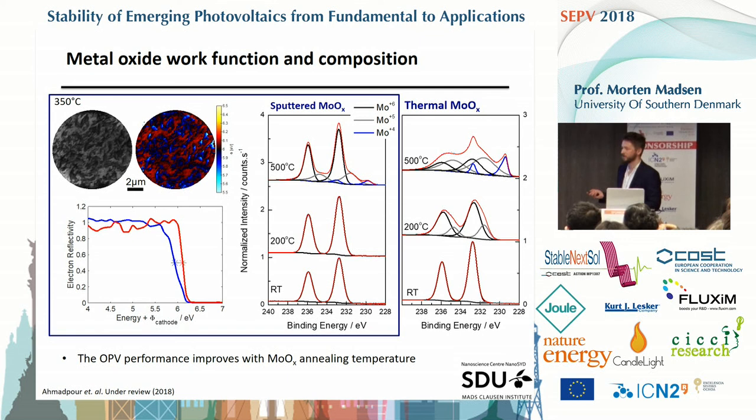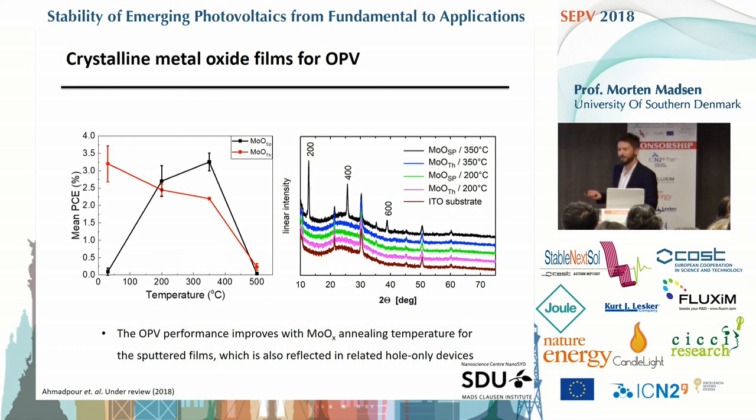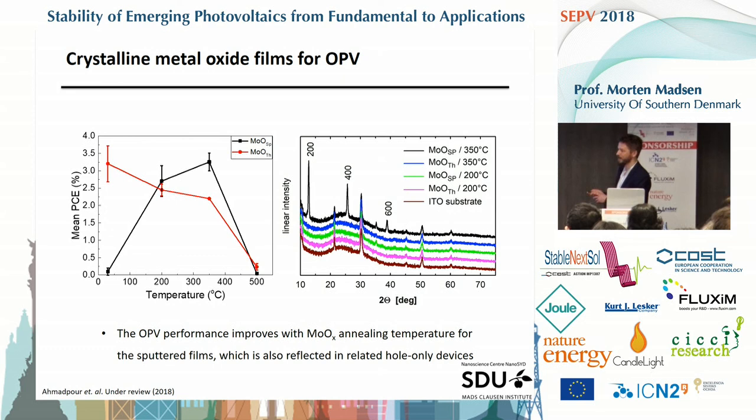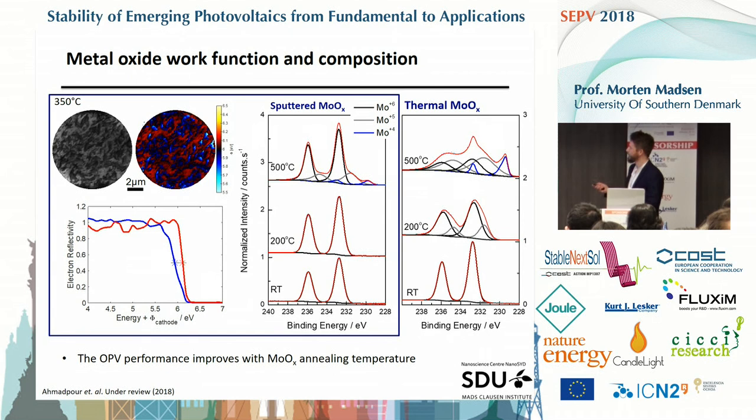We lose significantly more oxygen in the thermally deposited molybdenum oxide than in the sputtered oxide. That can explain the drop in performance that we see for the thermal deposit when we heat that up—we are losing oxygen, which means the oxide becomes less transparent, and also when you have a reduced oxide you start to lower the work function. At some point you lower the work function below the HOMO level of the contact layer and that should give you a drop in device performance. We think this picture of resilience towards heat treatment explains this trend in device performance.